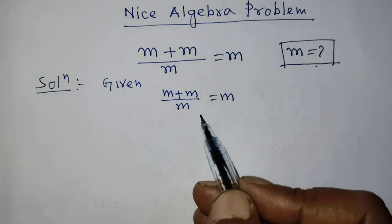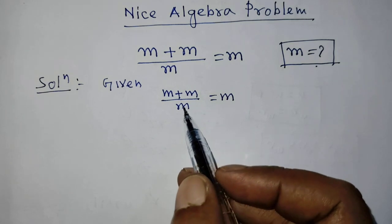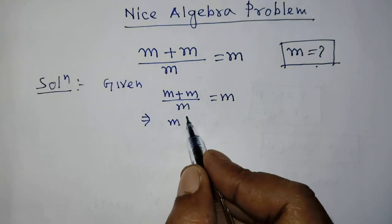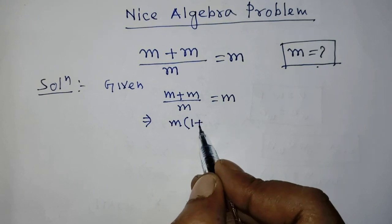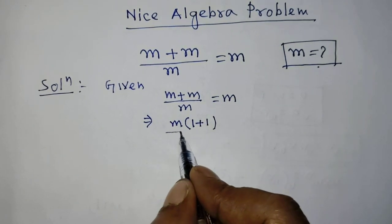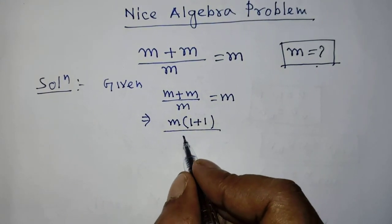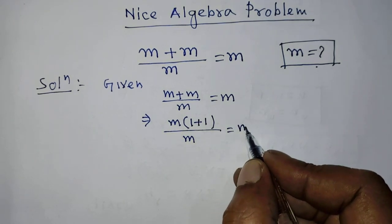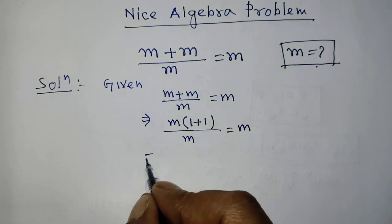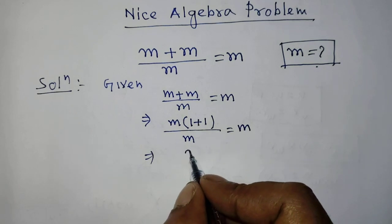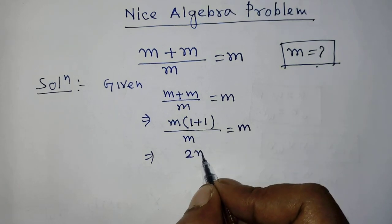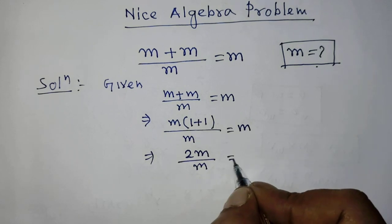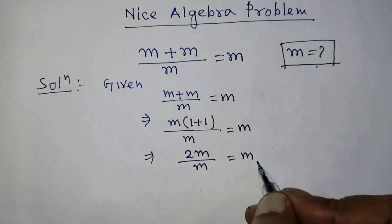In the first step of the solution, we can write in the place of numerator m times 1 plus 1 over m equals m. This becomes 2 times m over m equals m.